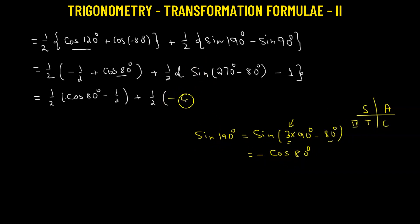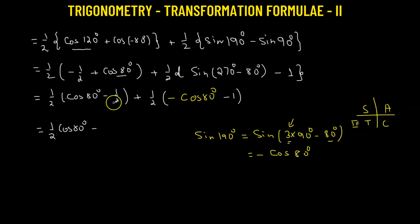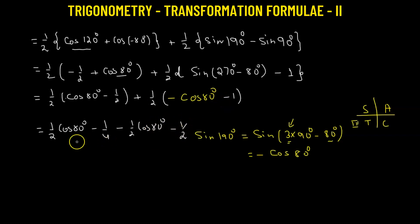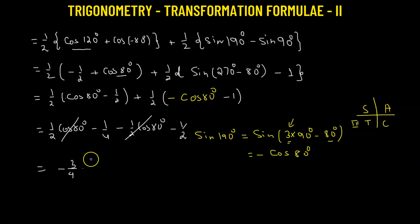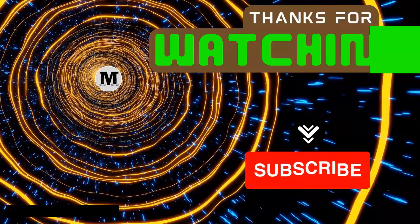Replacing sine 190° with negative cosine 80°, and sine 90° with 1, we get one half times cosine 80° minus one half times (negative cosine 80° minus 1). This gives one half cosine 80° minus one quarter, minus one half cosine 80° minus one half. The cosine 80° terms cancel, and combining −1/4 and −1/2 gives us the final value of negative three quarters.